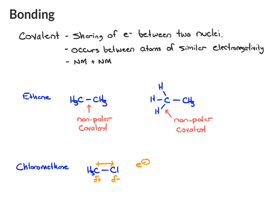Because that bond is polarized in one direction, this is called a polar covalent bond. The arrow that I drew, that's called a dipole arrow. And that points to the more electronegative atom.